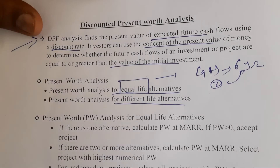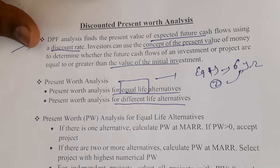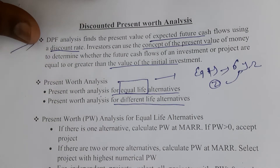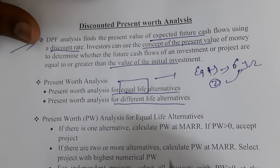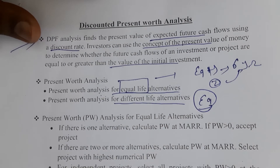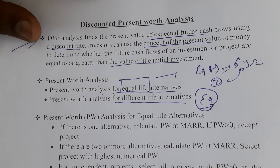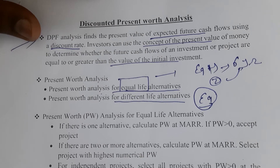The second category is present worth analysis for different life alternatives — where one equipment has a six-year life and another has an eight-year life, and we need to compare both. You can use the word 'equipment' instead of 'alternatives.' If two pieces of equipment have the same life, say six years, we calculate the present worth analysis to choose between them.